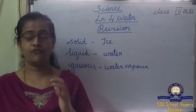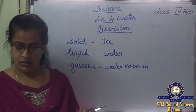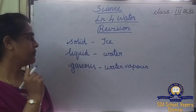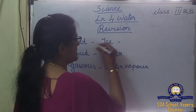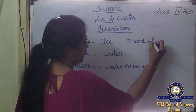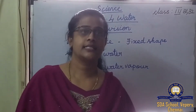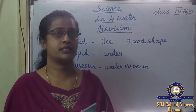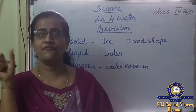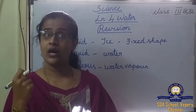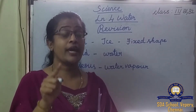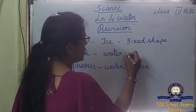Now let's learn about the three forms of water. Ice is the solid form. A cube of ice has a fixed shape — that is the main point. Solids like books and tables also have a shape of their own. Water is a liquid and it does not have a shape of its own.